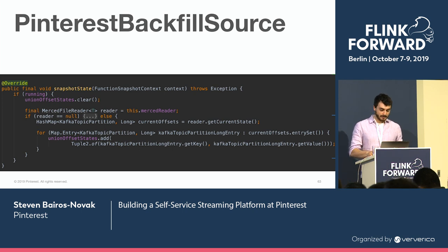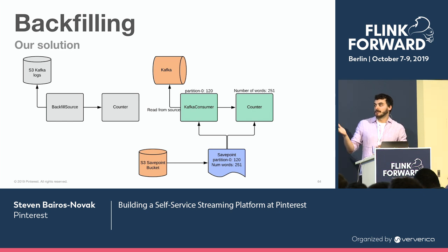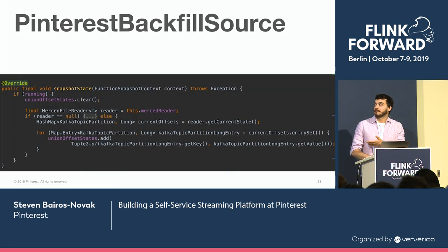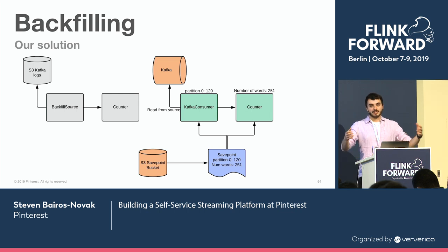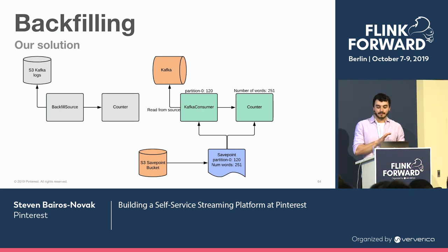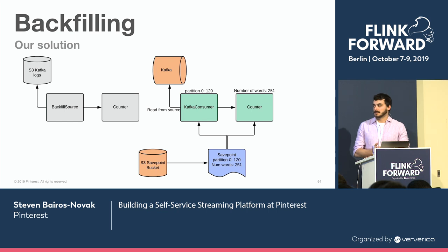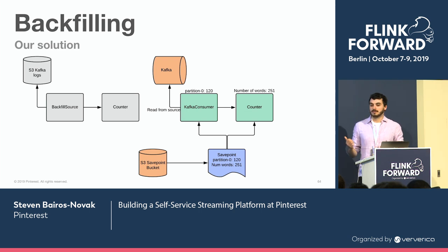So bringing it back: the backfill source uses Pinterest's backfill source's snapshotState function to upload state. Then the Kafka consumer, using the initializeState function, downloads that state back and treats it as its own state. The transition is completely seamless to Flink. Currently, we have to manually trigger the save point, kill the job, and restart it with the Kafka consumer. In the future, we'd definitely like to automate this somehow.